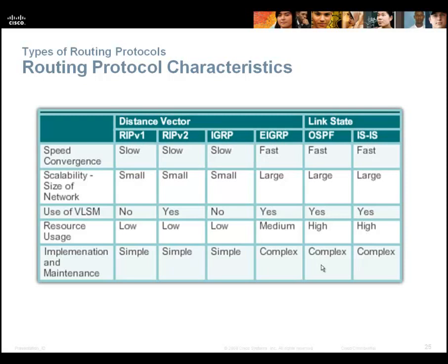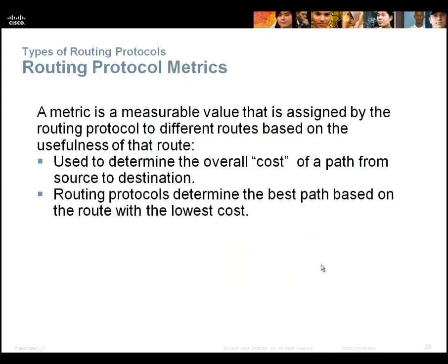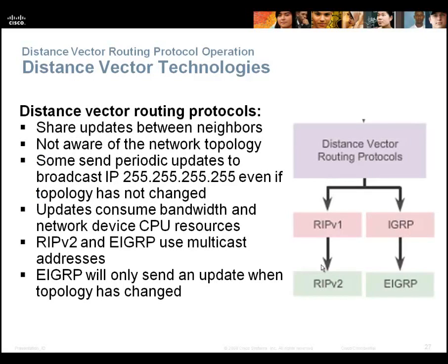How do routers calculate the best path? We call that the metric — the method used to determine cost. Each routing protocol has a different metric, and they pick the route with the lowest cost. Distance vector routing protocols share updates between neighbors, are not aware of the entire network topology, and send periodic broadcasts even if nothing has changed. This is an overview — EIGRP doesn't broadcast the full table; RIP, if nothing changes, sends its routing table every 30 seconds, which is another reason nobody uses RIP.